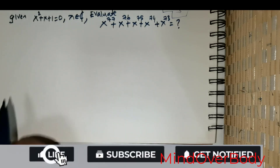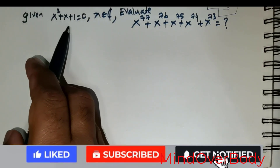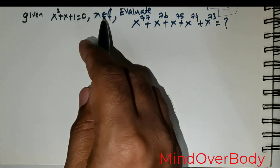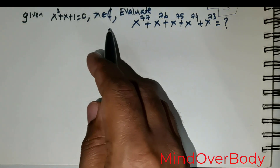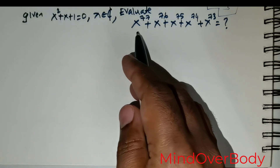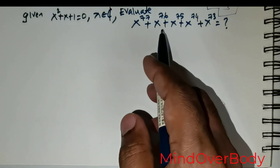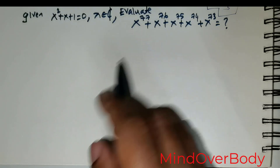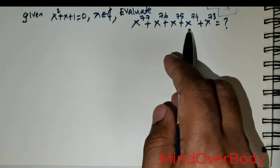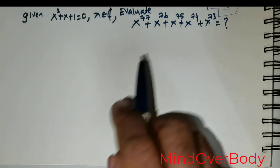Welcome students. You are given this question: x squared plus x plus 1 is equal to 0, and x is an element of the complex numbers. We are expected to find the value of the expression x raised to the power of 77, plus x raised to the power of 76, plus x raised to the power of 75, plus x raised to the power of 74, plus x raised to the power of 73.